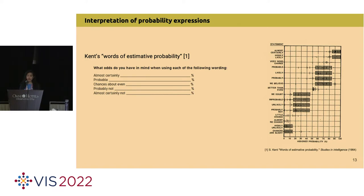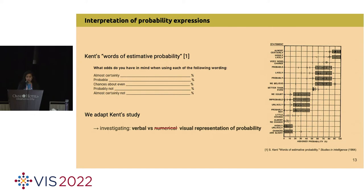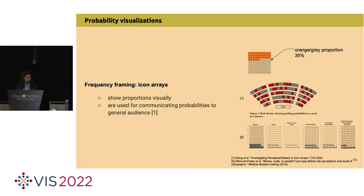The work that informs ours is Kent's study called 'Words of Estimated Probability.' In this kind of study, participants were asked to provide numerical estimations for probability expressions like 'almost certainly,' 'probably,' etc. For our case, we adapted the study to focus instead on the verbal versus visual representation of probability. For the visual, we use icon arrays because they are good for showing proportions visually and are used a lot for communicating probabilities.